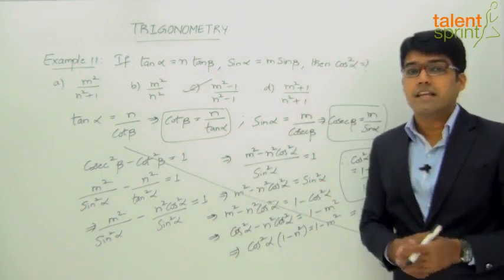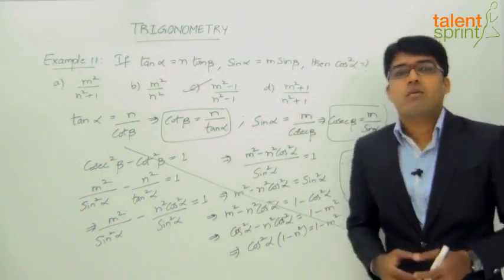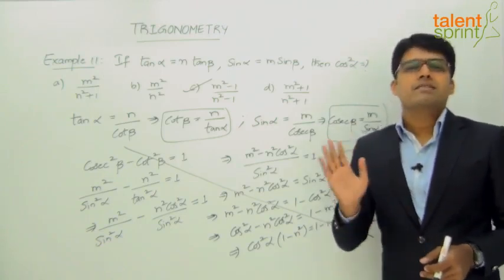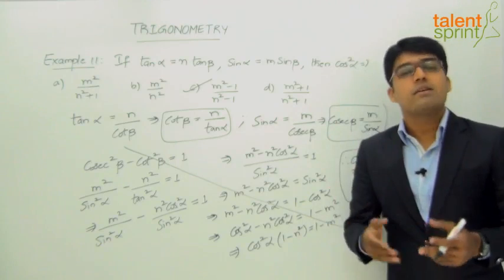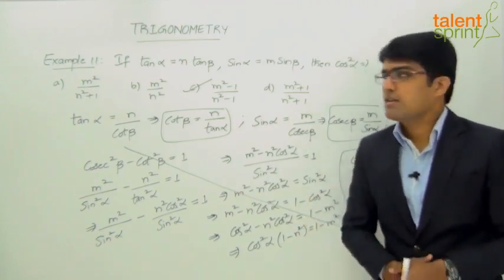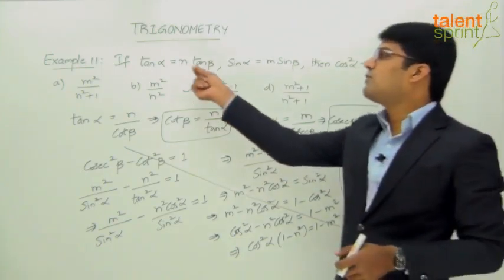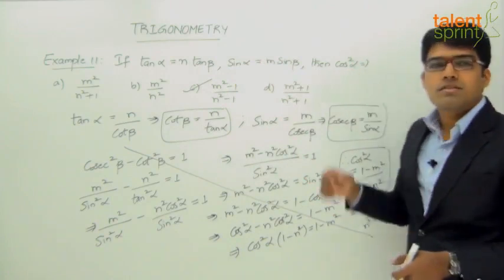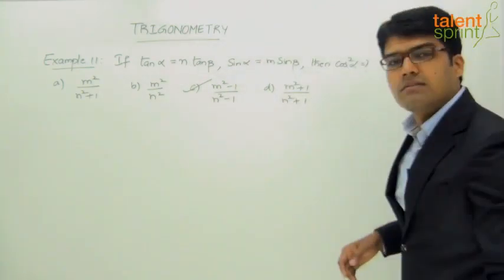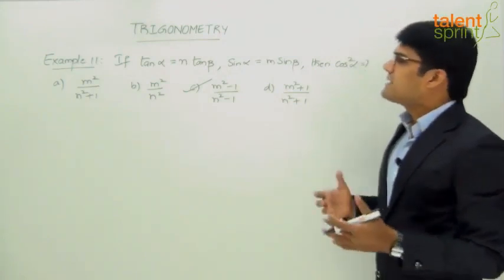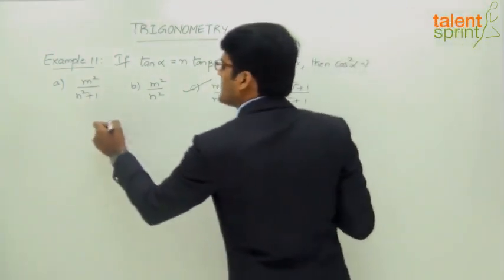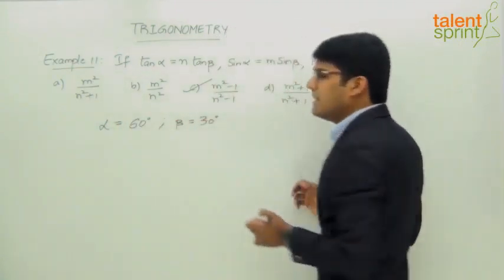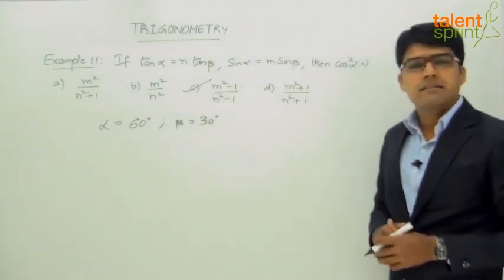If we avoid the traditional method, what is the smart way of getting the answer? Most questions from this topic can be answered by substituting specific angle values in place of the given variables, then checking which answer option satisfies the given conditions. Let us assume some values for α and β — say α = 60° and β = 30°. You can take any values; I am going with 60° and 30°.